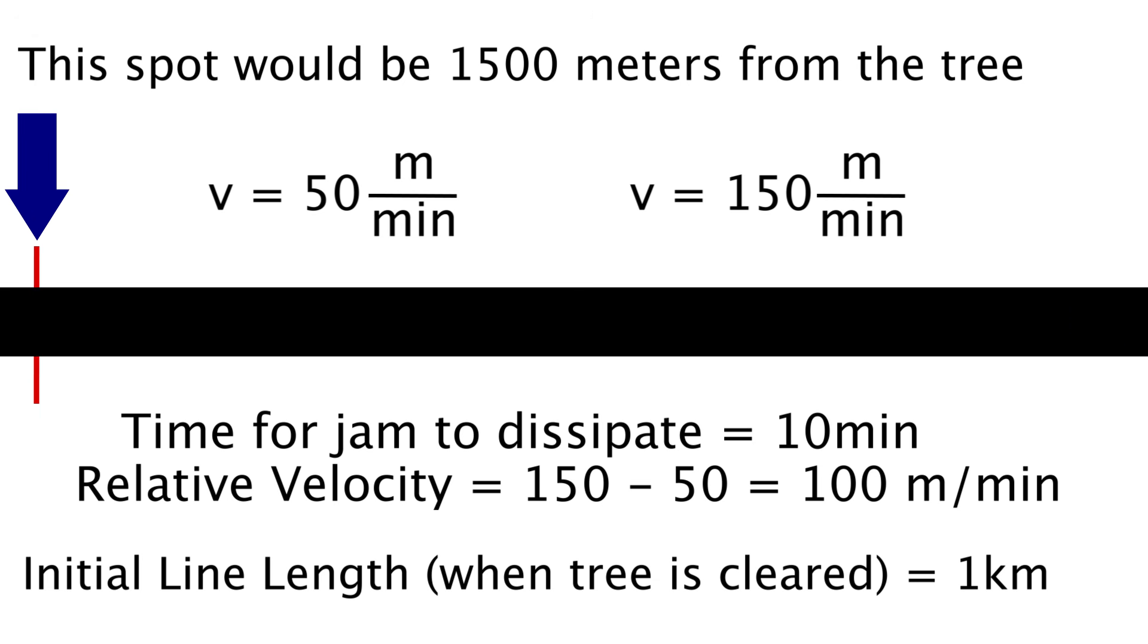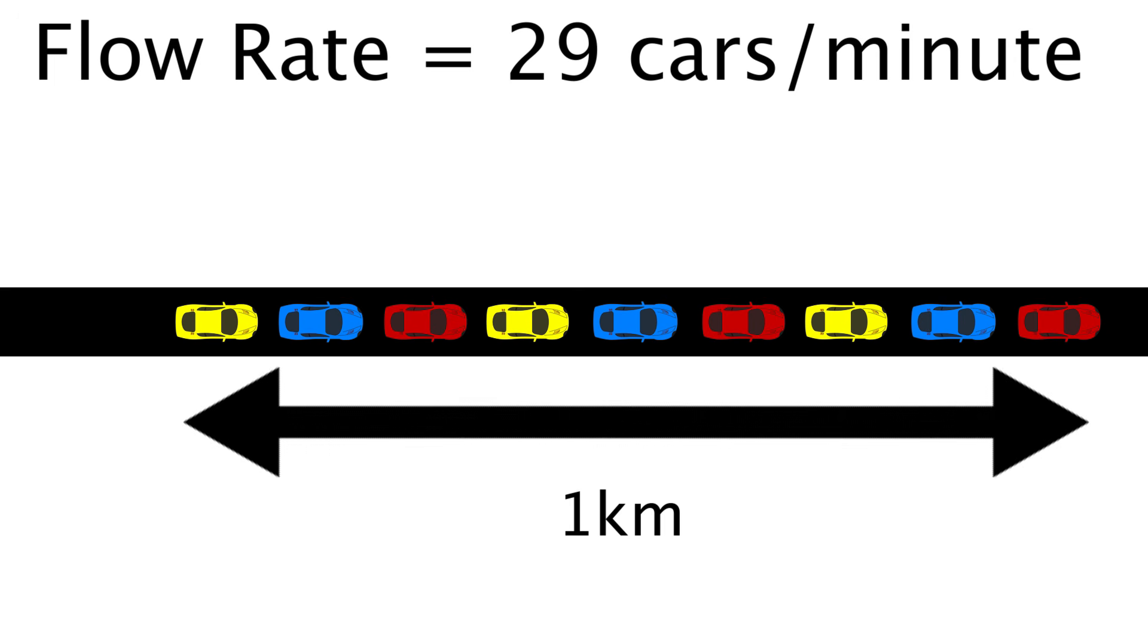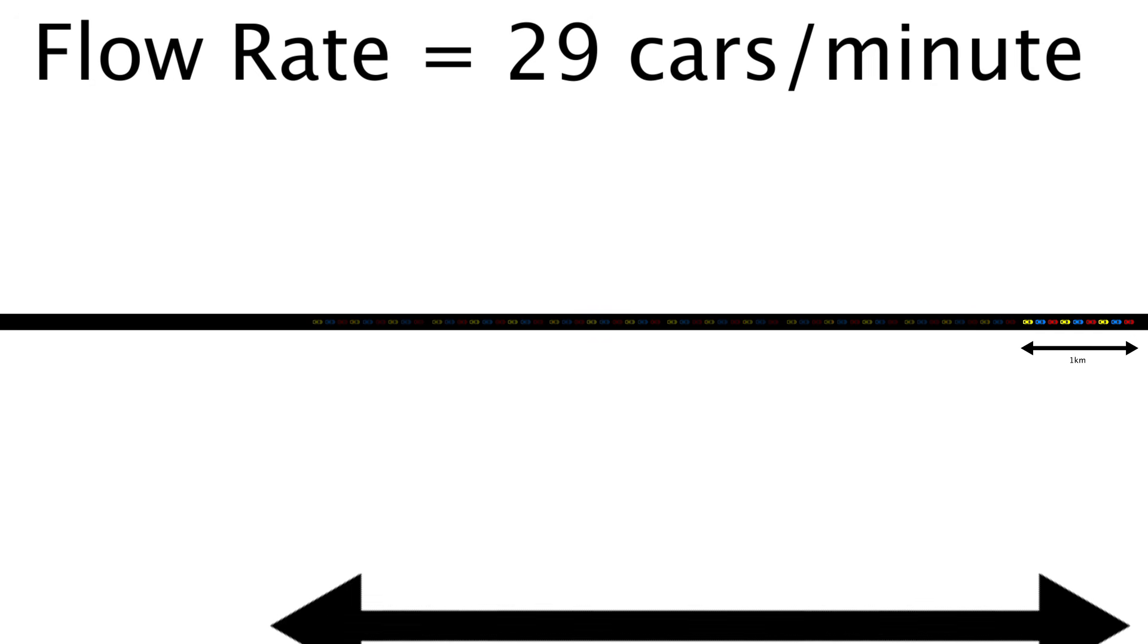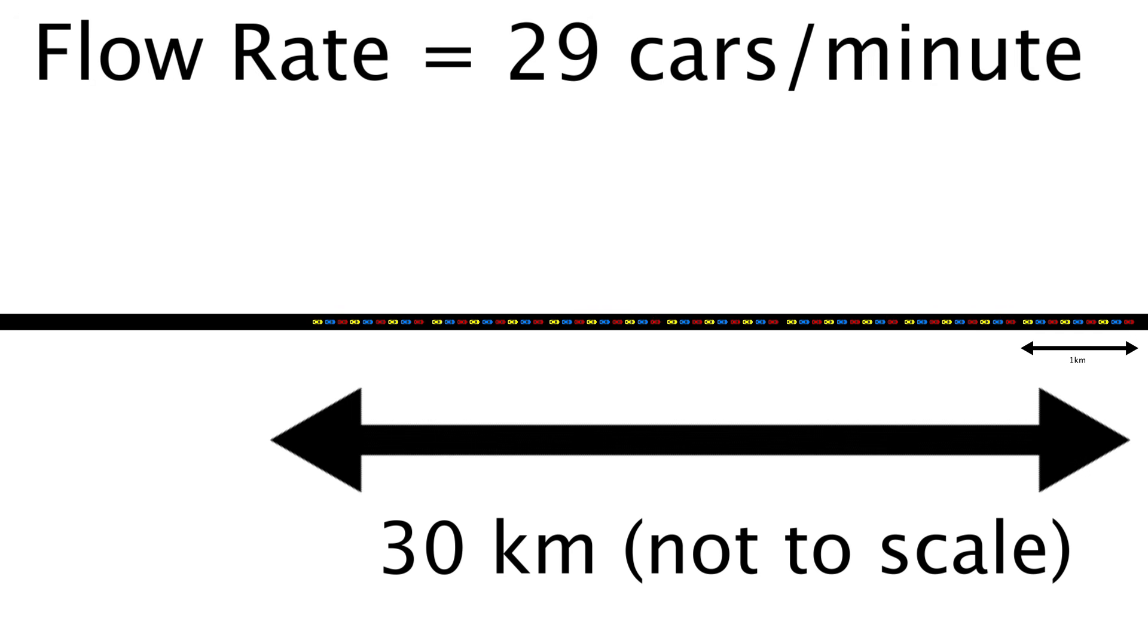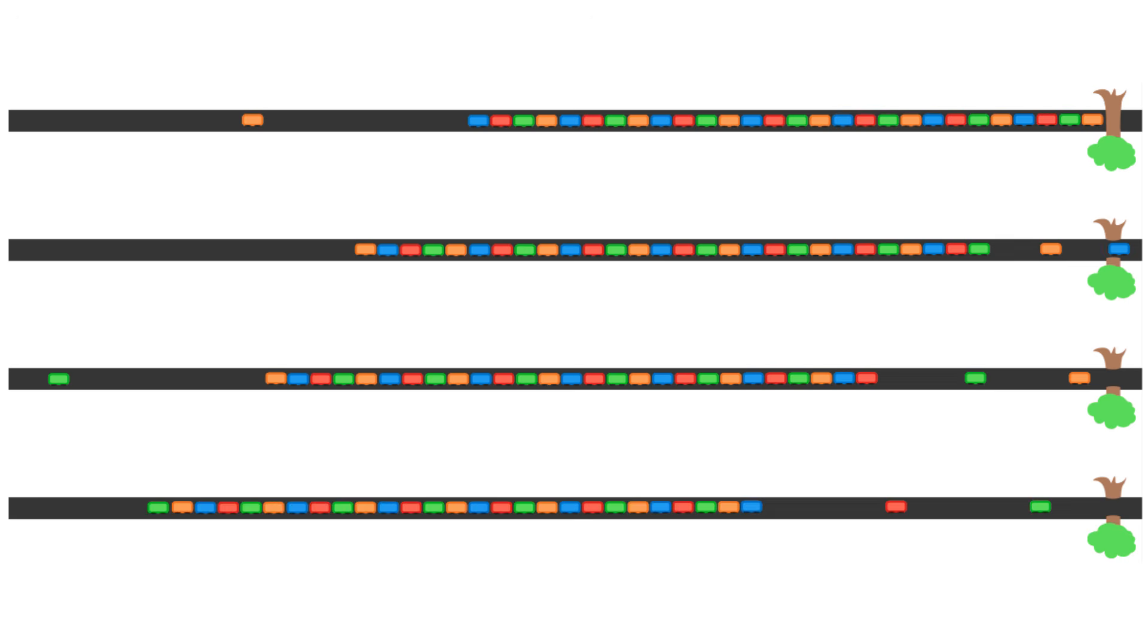But the crazy thing is, if 29 cars arrive per minute instead of 10, and still the line was one kilometer long once the tree was cleared, then the jam would propagate 30 kilometers from that tree over a course of over 3 hours from when the tree was cleared. Now the line would not be that long, but it would propagate that far backwards like a wave as people arrived at the back while others drove away from the front.